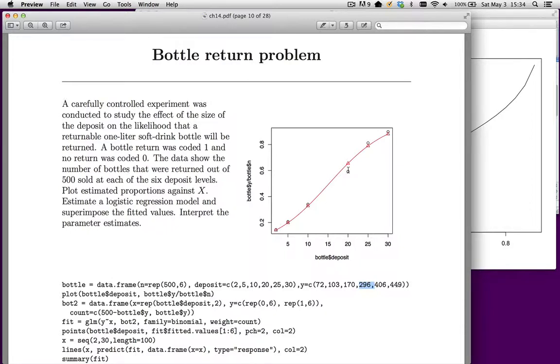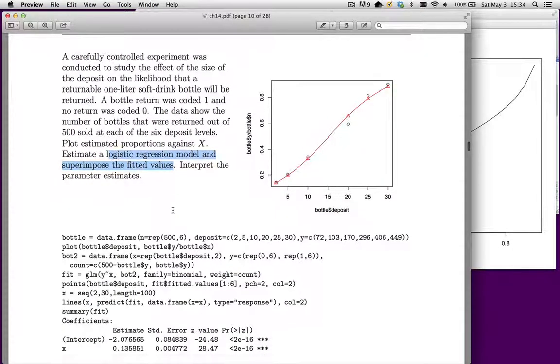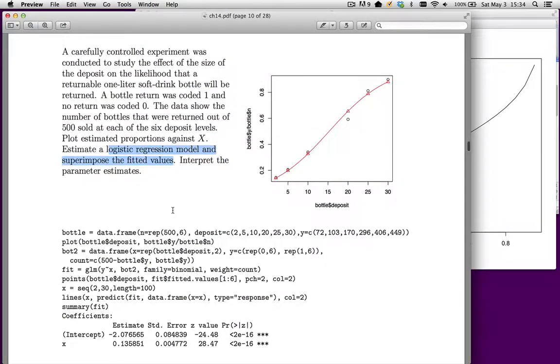So these circles trace the path of the percentage returned, probability that we get a bottle back, as a function of the deposit that we're charging. So the problem that we're asked to do, plot the estimated proportions against x. We just did that, x being the deposit amount. Estimate a logistic regression model and superimpose the fitted values. Well, I've done all the R for you down here.